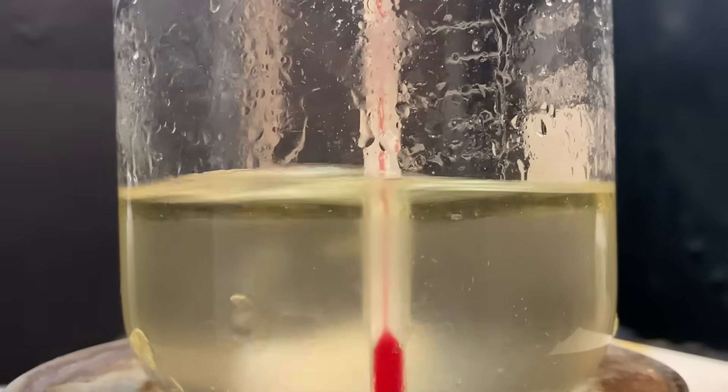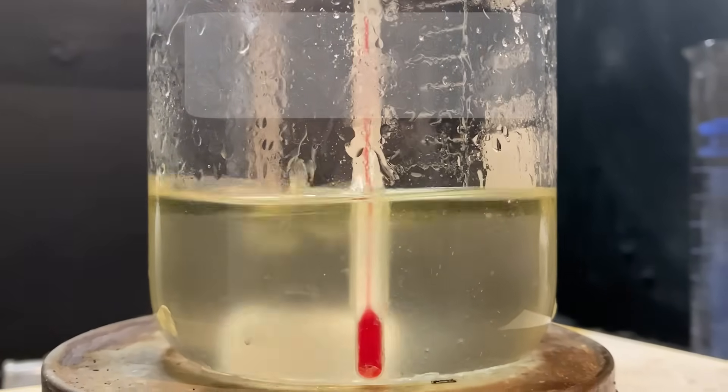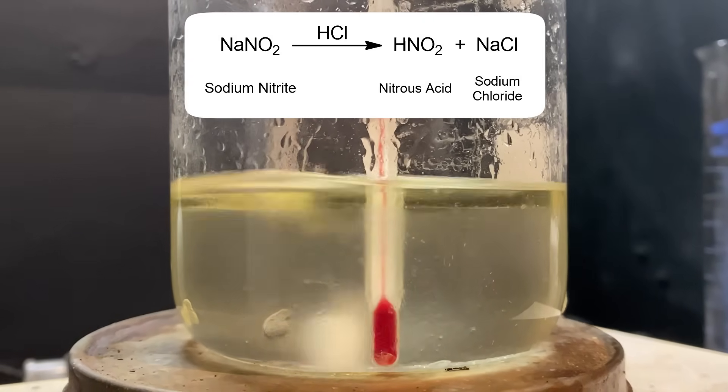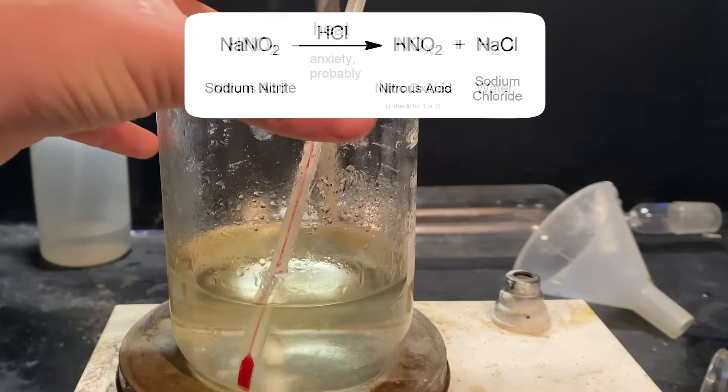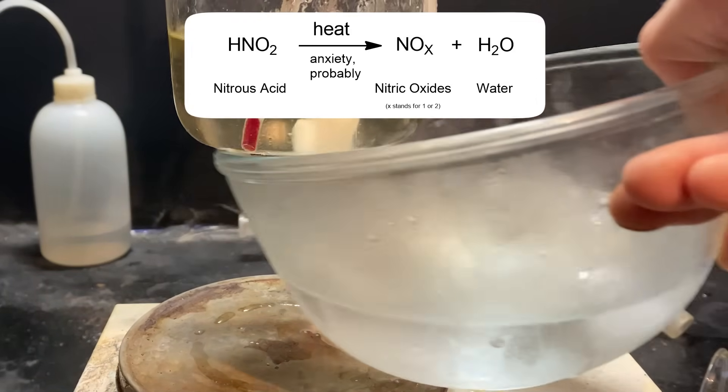What's happening here is an esterification of the isopropyl alcohol by nitrous acid. This reaction happens in two stages. First, the strong hydrochloric acid reacts with the sodium nitrite to form the weak nitrous acid. Nitrous acid is extremely unstable, just like me, and likes to break down into nitric oxides.